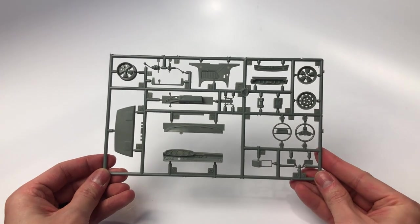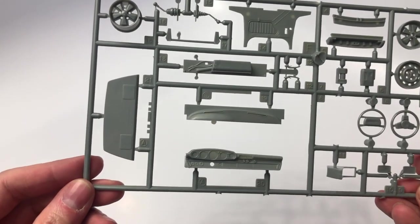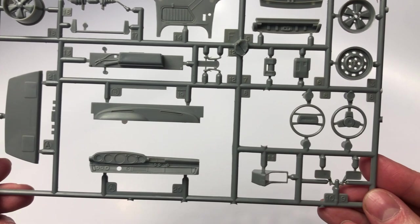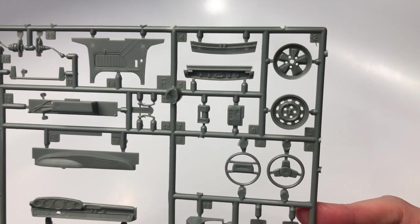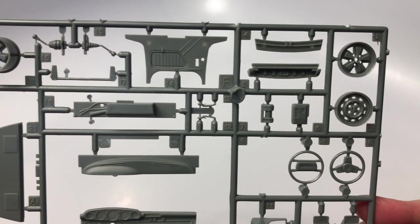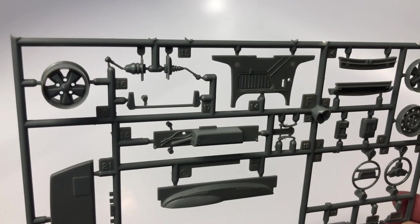Here we have some interior parts including the dash, multiple gear shift options, multiple steering wheel options, and two spare tire wheels to choose from. This kit gives you a fair amount of options for detailed parts.